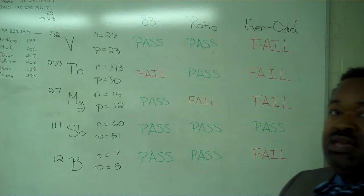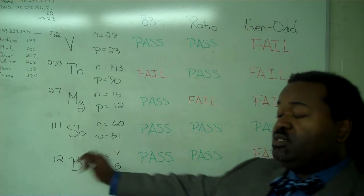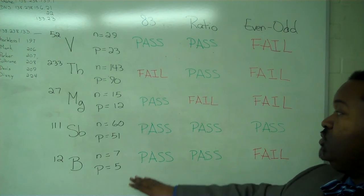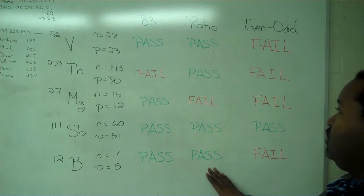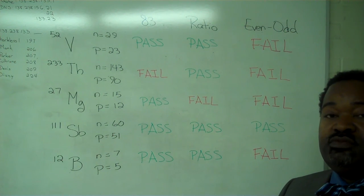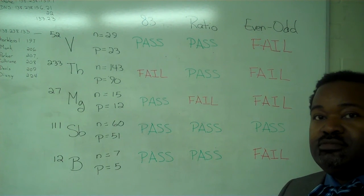So by being able to look at an isotope symbol and determine the number of neutrons and protons, it is possible to apply the 83 test, the ratio test, and the even-odd test in determining the likelihood of nuclear stability.